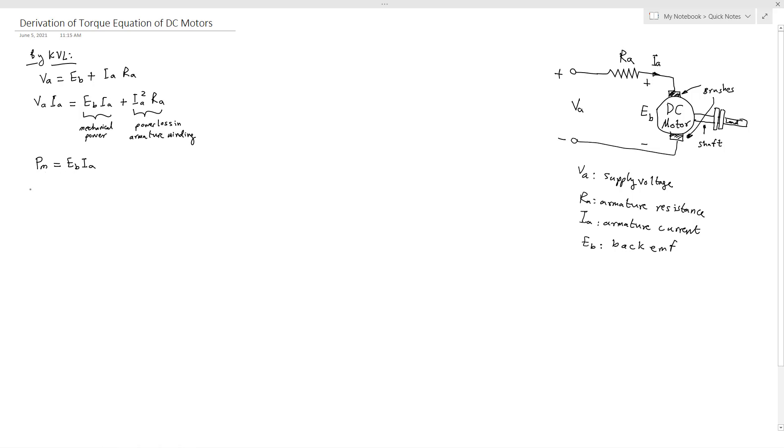Now let's equate these two equations. EB IA will equal T omega, and we know also that back EMF EB equals P phi Z N divided by 60 A.